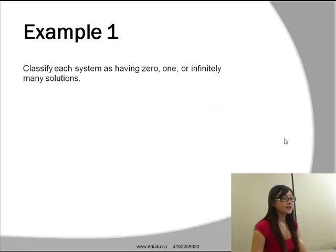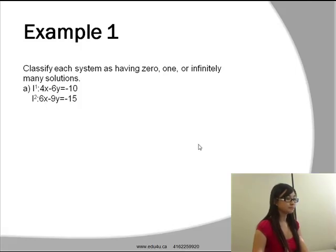Let's take a look at example 1. Classify each system as having 0, 1, or infinitely many solutions. First, we have two lines. Line 1 is 4x-6y=-10. Line 2 is 6x-9y=-15.